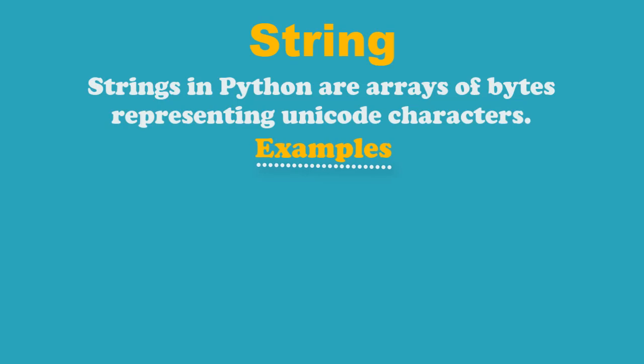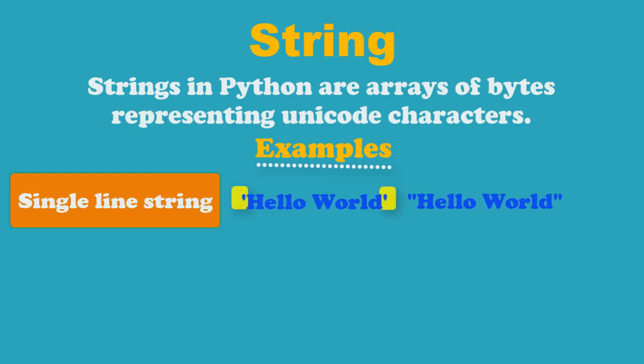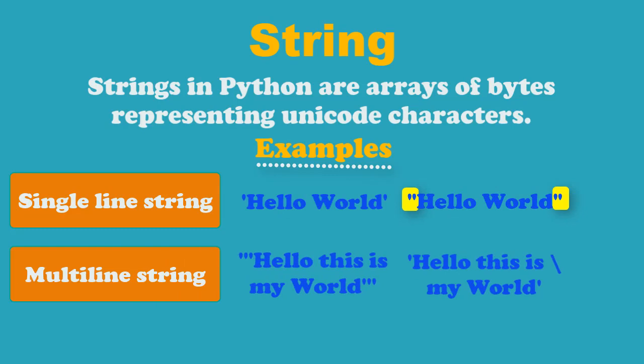Strings in Python are surrounded by either single quotation or double quotation marks. Python strings can also be multiline string by either using triple quotes or using slash at the end of each line. To note, Python does not have character data type. A single character is simply a string with a length of 1. Python strings are immutable which means they cannot be changed after they are created.